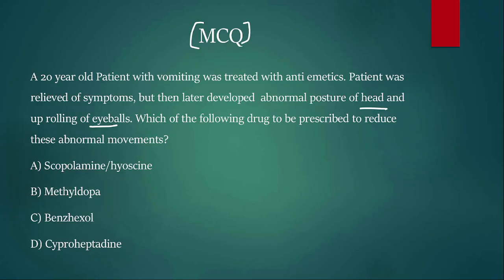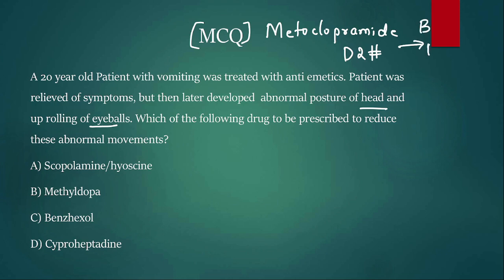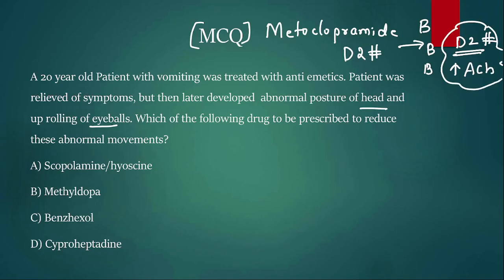The antiemetic we can guess from this is metoclopramide — it is frequently tested in exams. This drug is a D2 blocker that crosses the blood-brain barrier and blocks dopamine in the brain. Once dopamine is blocked, there is dopamine blockade and increased acetylcholine, which leads to an abnormal movement called acute dystonia. The patient may present with torticollis or oculogyric crisis.